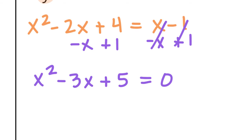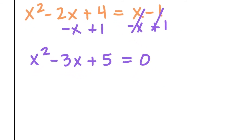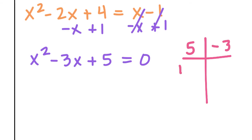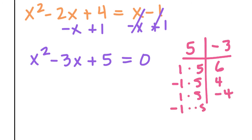Now I'm going to try to factor that quadratic. I need numbers that multiply to 5 but add up to negative 3. I could try 1 times 5 — but adding those gives 6. What if I make one negative? That's 4. The other negative? That's negative 4. Both negative? Negative 6. No matter how I arrange it, I was never able to get negative 3. That means this quadratic equation is not factorable. Luckily we have another option — let's use the quadratic formula.